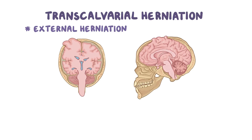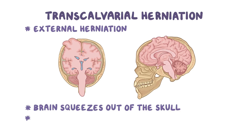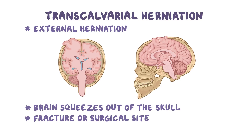The fourth type of supratentorial herniation is transcalvarial herniation, also called external herniation. In this, the brain squeezes out of the skull through a fracture or surgical site during an operation.